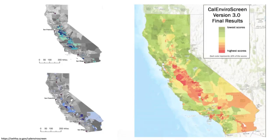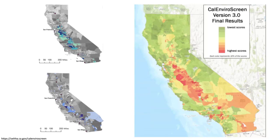CalEnviroScreen shows what this looks like statewide. The top left is the pollution burden — air quality, water quality, landscape disturbance — where darker blue areas show more intense environmental burden. The bottom left shows socioeconomic indicators like low income, health indicators, and employment, with blue areas indicating greater social vulnerability. The larger map on the right is the composite of both — the red and orange areas are where there are high levels of both social and environmental vulnerability. It's a really useful tool if you're proposing a project in an already vulnerable area, and you can zoom into individual counties and census tracts.